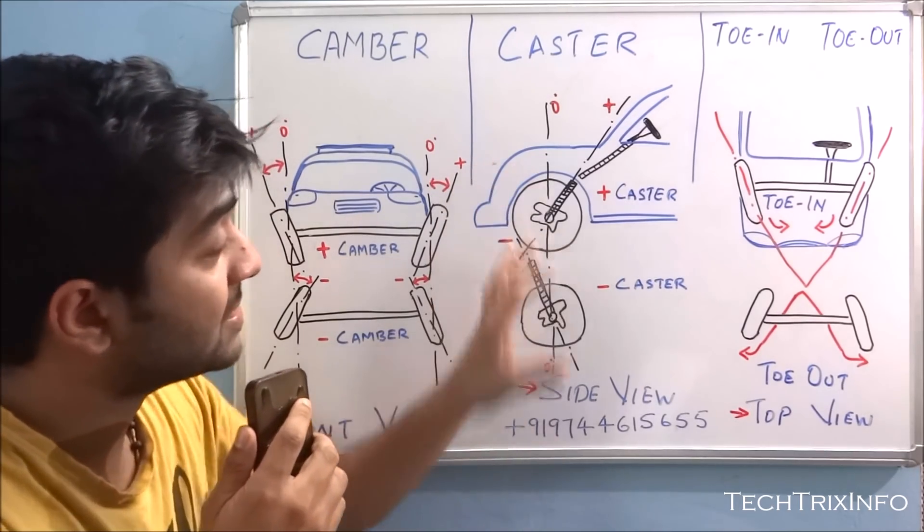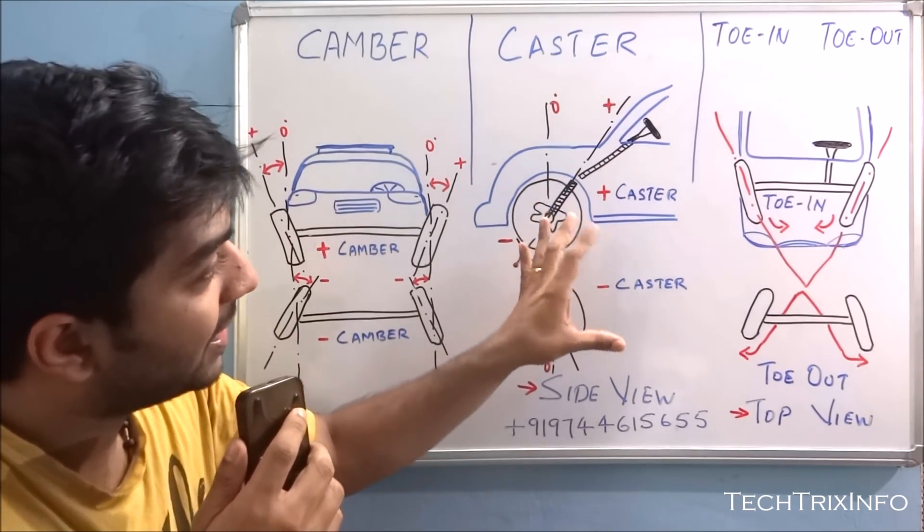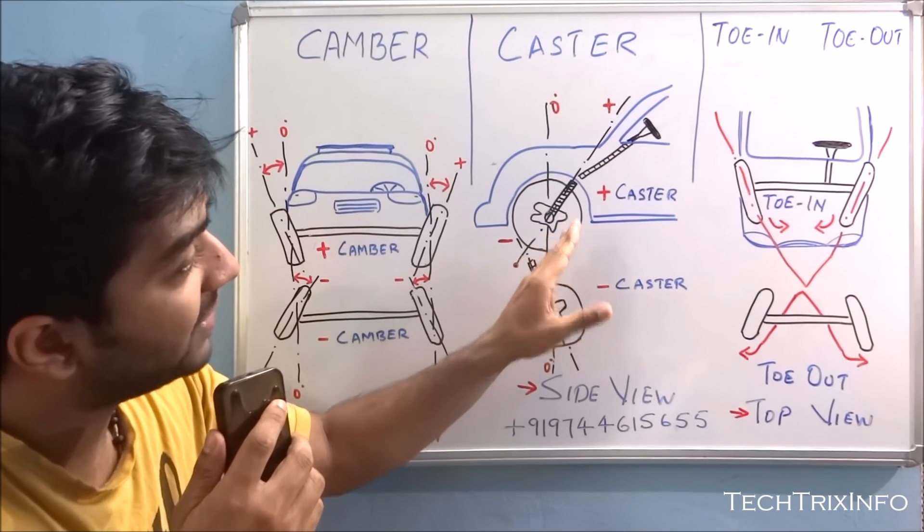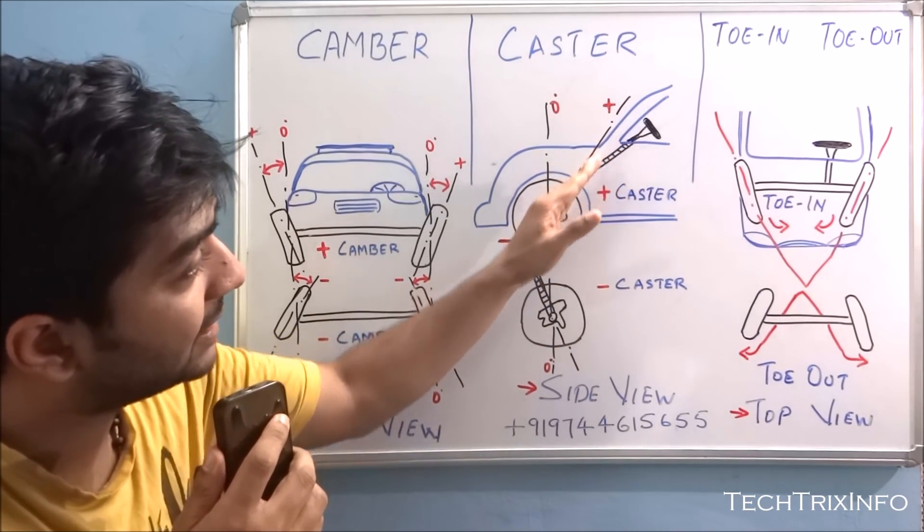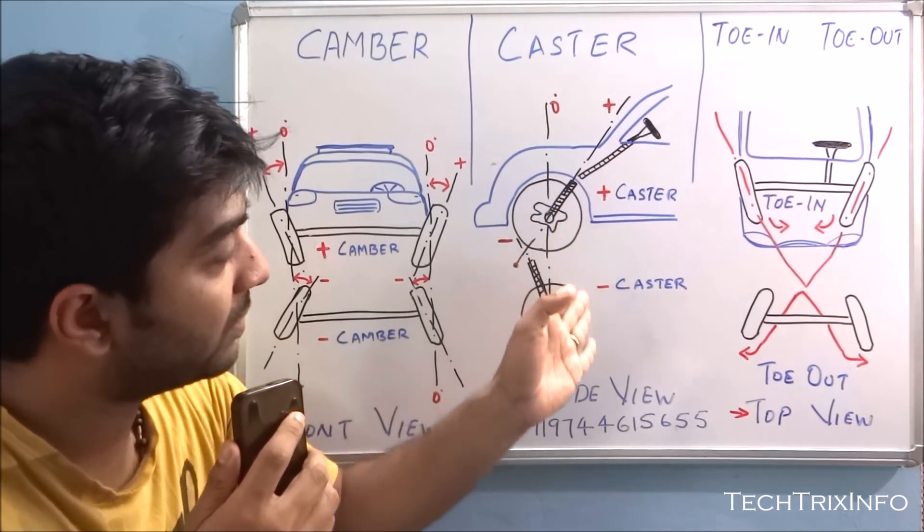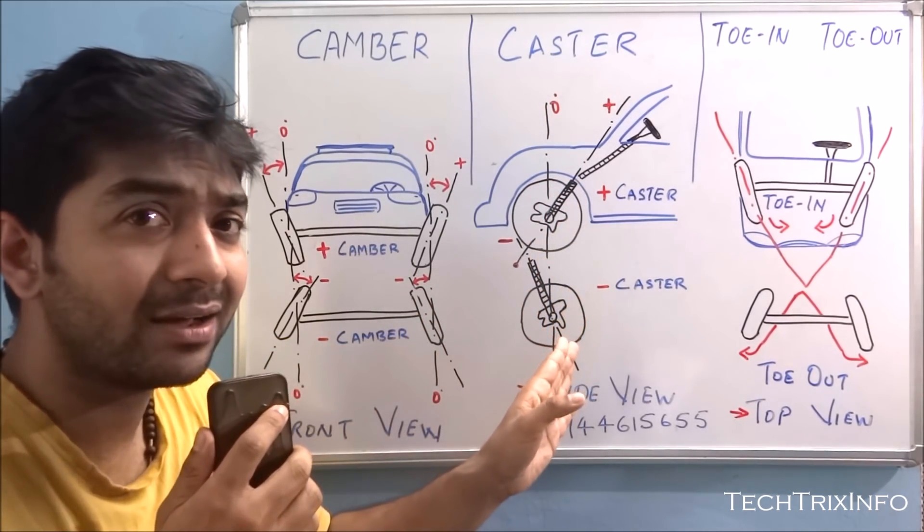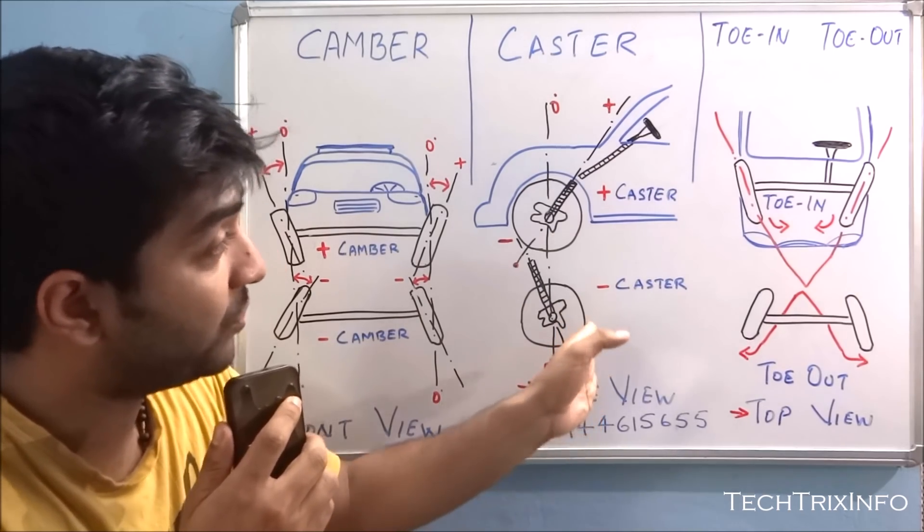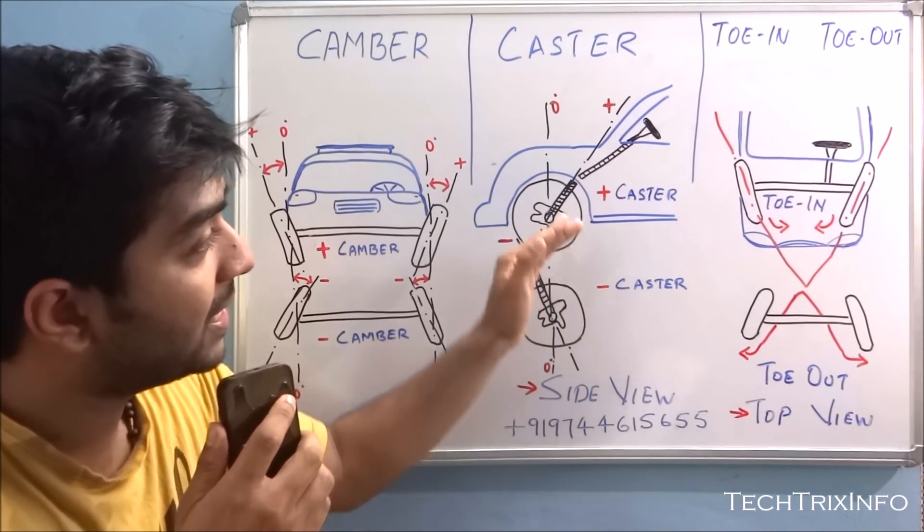So now let's go and see what is caster. This drawing you can see, caster is simply the angle of the steering axis with reference to the vertical axis of the car when you look from this side. So it's actually depending on the side view of the car when you see from the side.